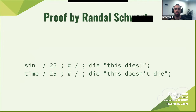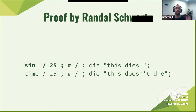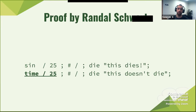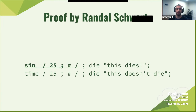The reason: the first one — 'sin' — will see 'sin /25/;' as one statement. The two slashes form the argument to the function, the actual content between them is the argument. On the other hand, 'time' has no arguments, so you call time, it returns something, and that gets divided by 25. So in the first example, everything gets executed as one function call with the content between slashes as an argument. In the other case, it divides by 25, then the rest is a comment.